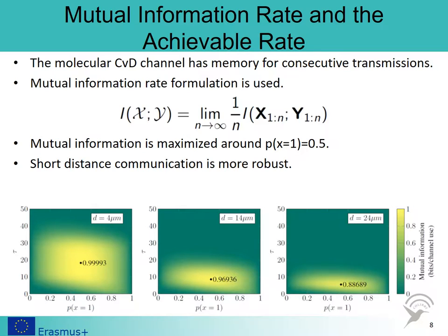Remember the mutual information and channel capacity formulations introduced earlier in the course. These formulations are correct when we are sending only a single bit or whenever the channel is memoryless, that is, a transmission is not affected by the previous bits. In the case of consecutive transmissions, leftover molecules from the previous bits affect the current transmission. Therefore, the channel has memory. In this case, we use the mutual information rate formulation. The maximum of the mutual information rate is called the achievable rate, which is analogous to the channel capacity.